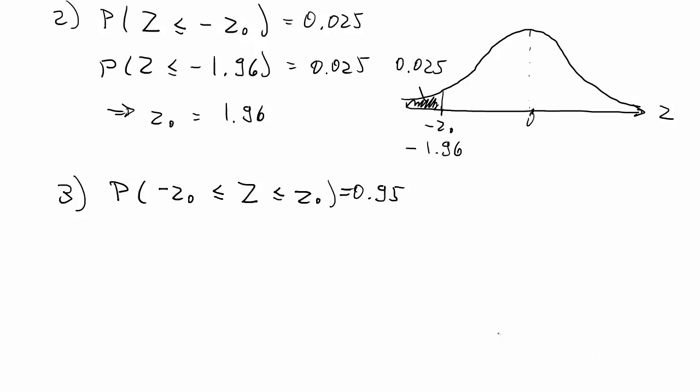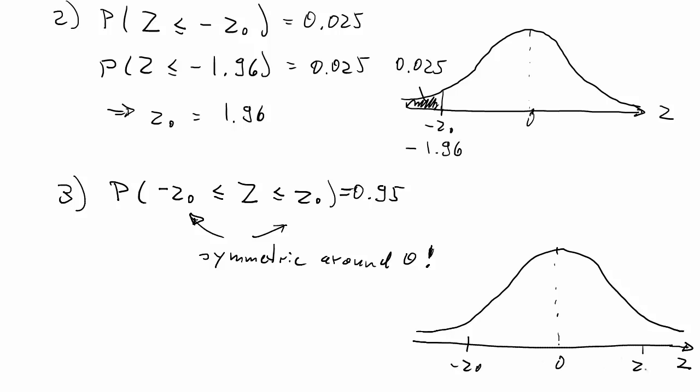So, as customary by now, we start with an initial sketch of the PDF centered around zero. Now, the first thing to note that makes our problem easier is to realize that we are looking at something that's symmetric around zero. So we're looking at negative z0 and plus z0. So we have these two values. They're equally apart from zero.